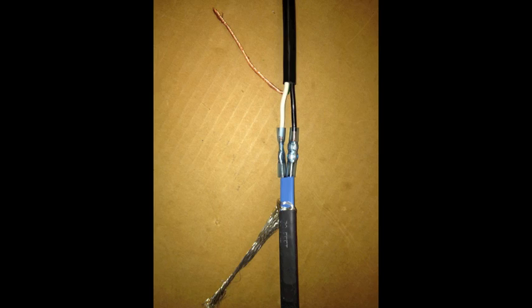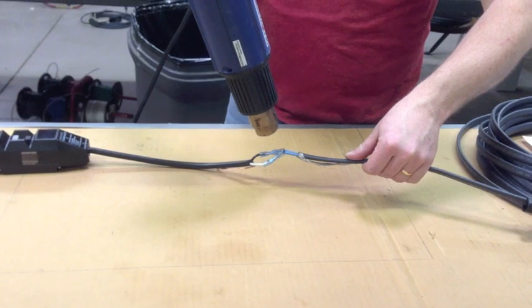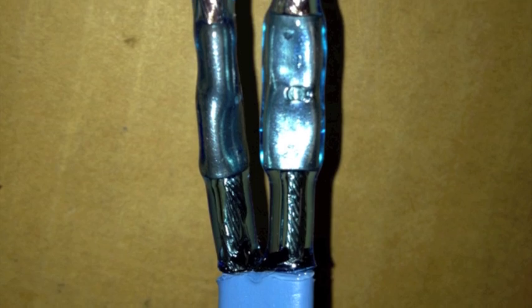Now that they are connected, it is time to heat shrink the butt connectors. Make sure not to hold the heat on for too long.